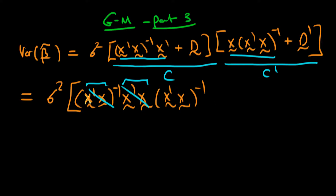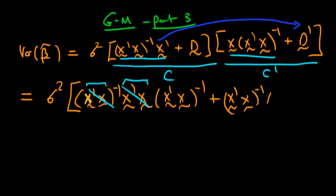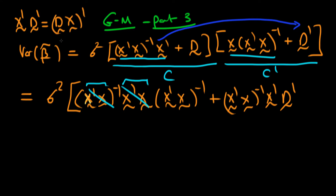The second term can be written as the first term times D transposed, which equals x primed x to the power minus 1 times x primed times D transposed. We can simplify this because x transposed times D transposed equals D x all transposed, since transposing a product reverses the order. We recognize this term because for beta tilde to be unbiased, D x had to equal zero. So in fact we just get zero for the second term.